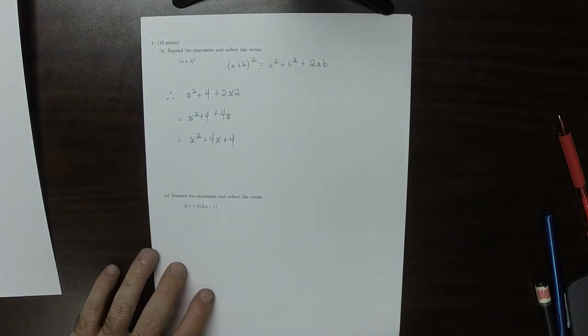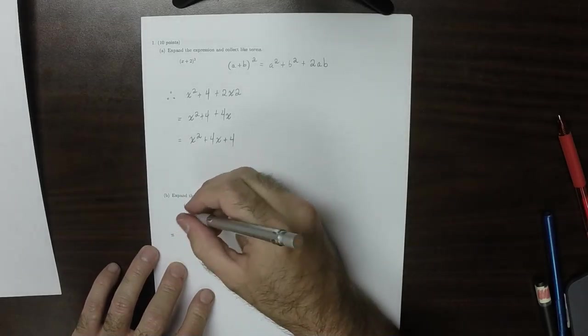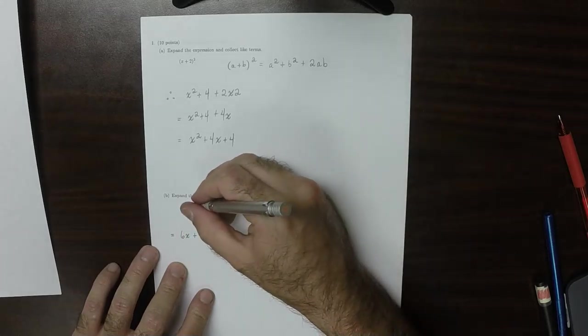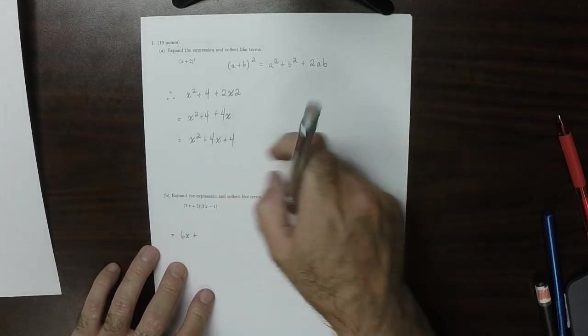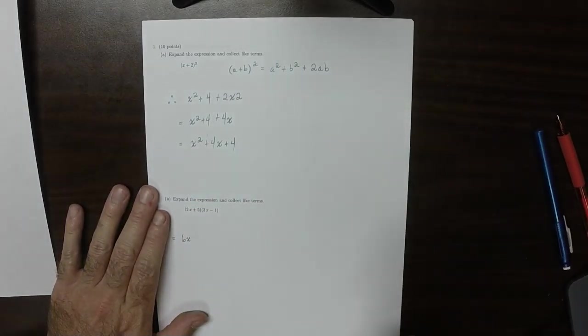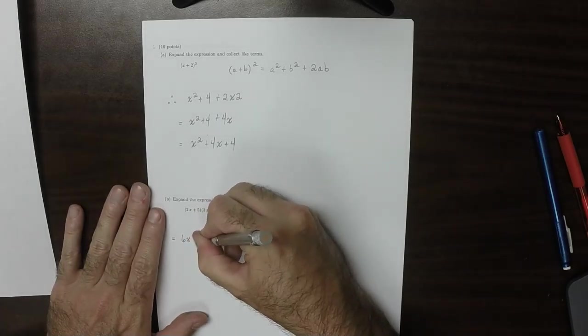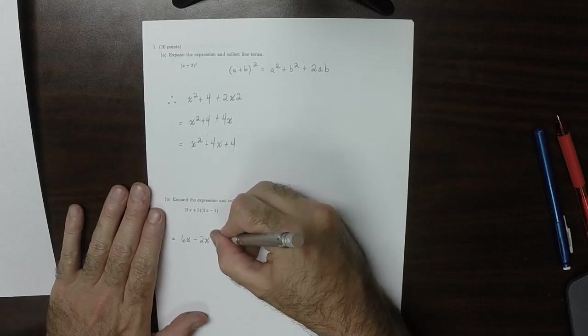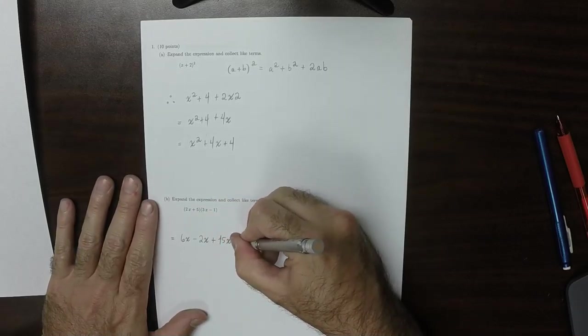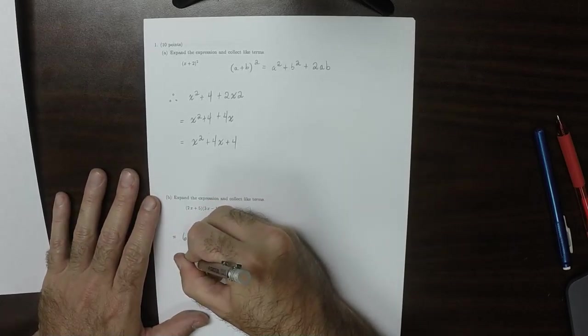Okay, this one just FOIL. So that would be 2x times 3x. That's 6x squared plus the outside terms. So that would be minus 2x plus the inside terms. So 15x, and then minus 5.